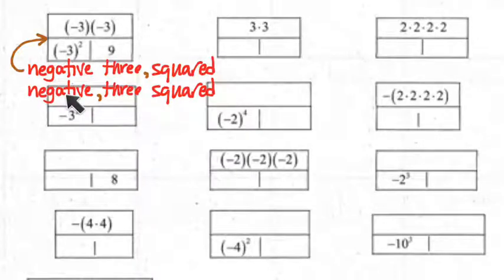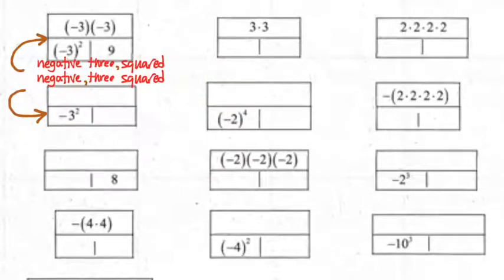But the second version of the sentence, what's actually getting squared? The 3 is getting squared, and then the result of that is being made negative. And a mathematician would say, that is what this second version of this expression really indicates. That the negative is standing aside while the squaring happens. And then only after the squaring has happened will we worry about the negative.